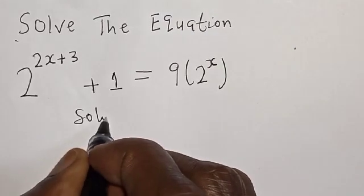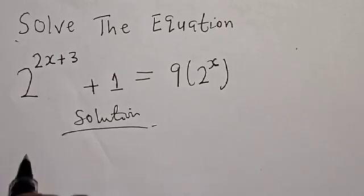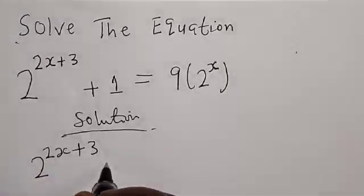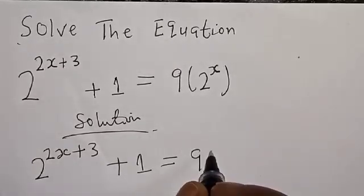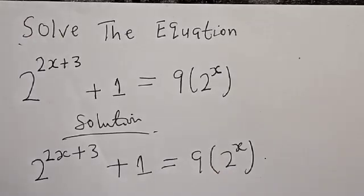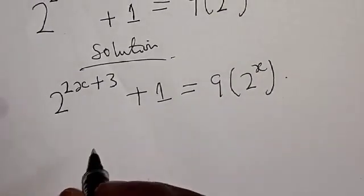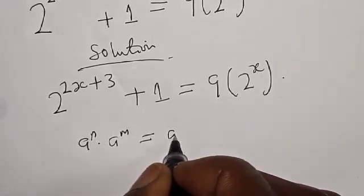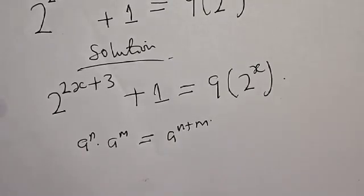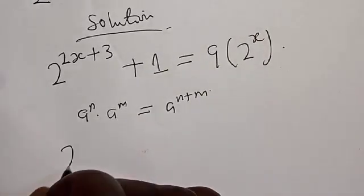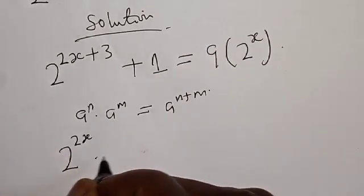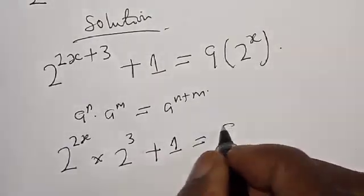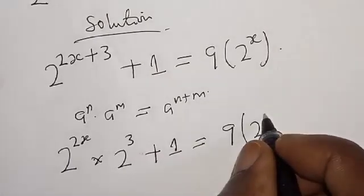Solution. We have the given equation: 2 raised to power 2s plus 3, plus 1, is equal to 9 into 2 raised to power s. Remember, if you have a raised to power n multiplied by a raised to power m, that is the same as a raised to power n plus m. Therefore, our equation becomes: 2 raised to power 2s multiplied by 2 raised to power 3, plus 1, is equal to 9 into 2 raised to power s.